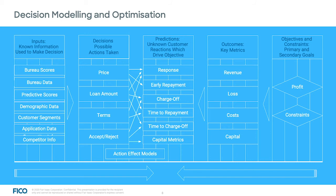What we do with decision modeling and optimization is start from the right-hand side — defining the profit, goals, and constraints. We look at the key metrics, and we then use the data and all the possible decisions and actions that can be taken to run for each and every customer what you see in the middle: the decision model — optimizing for each customer and across the portfolio what the optimal decision is for each and every customer.